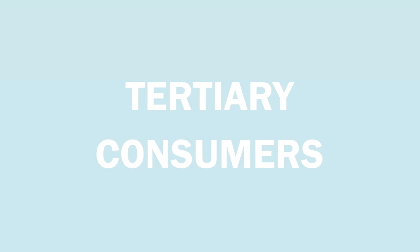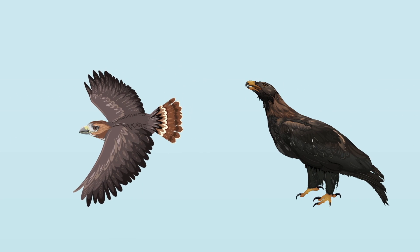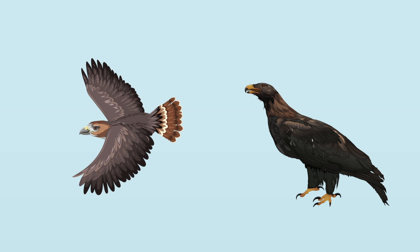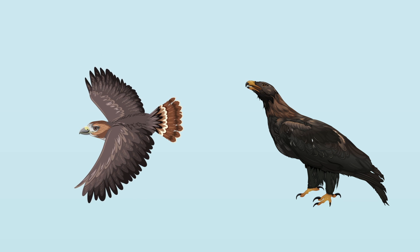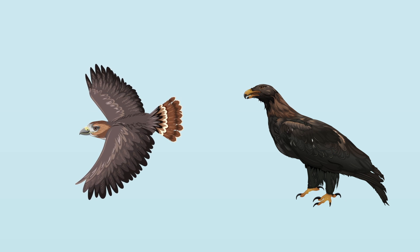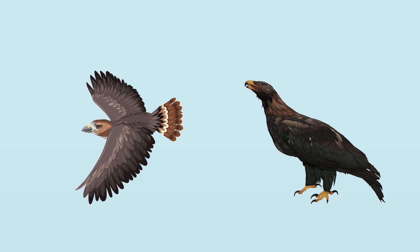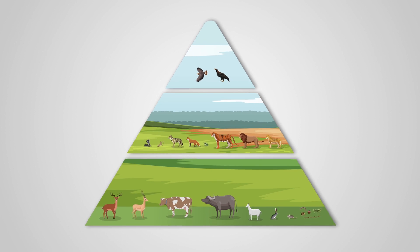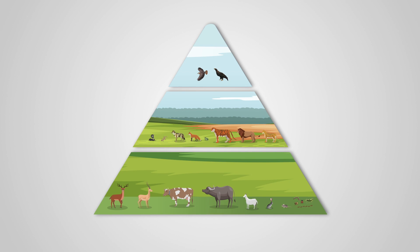Birds like hawks and eagles constitute the tertiary consumers in the grassland ecosystem, preying upon the secondary and primary consumers. Therefore, conservation of grasslands conserves the land races of important food and fodder crops, essential for the survival of all life forms including humans.